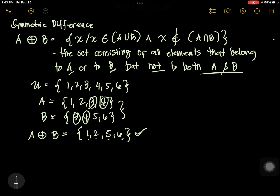Somehow it is the opposite of intersection. Because in the intersection, you answer the common elements — you have two sets and you answer the common. But in symmetric difference, you answer the elements that are not common to both sets. So the answer is 1, 2, 5, 6. We cancel 3 and 4.